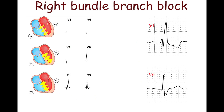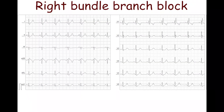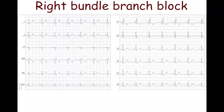The right bundle branch block results in an RSR' pattern — M-shaped — in lead V1, frequently extending to leads V2 and V3, and a slurred S wave in lead V6, also frequently in leads I and AVL.